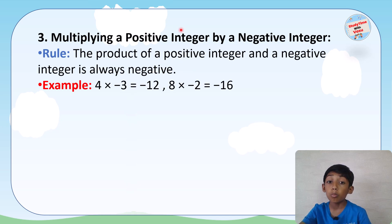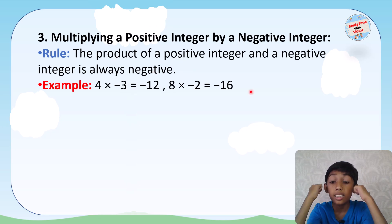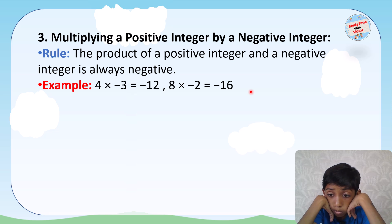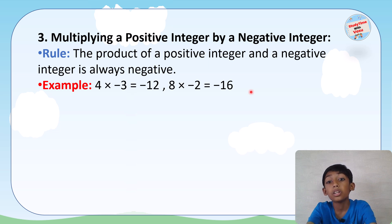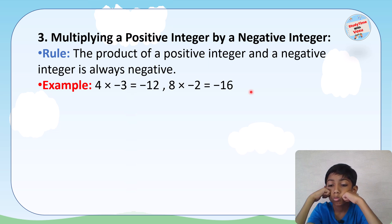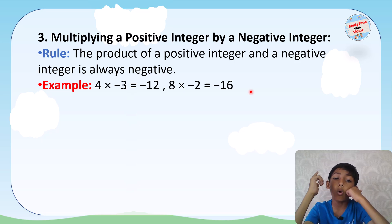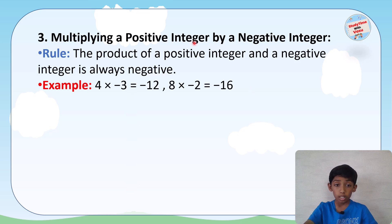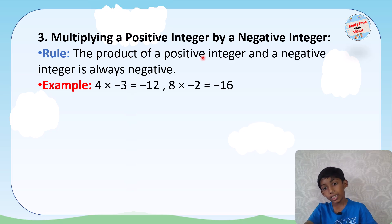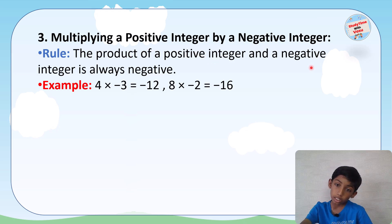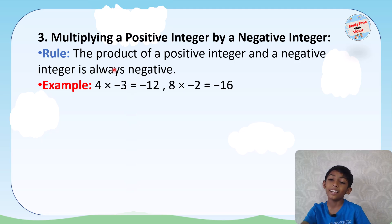Next, how to multiply a positive integer by a negative integer — that is a big question. The rule is: the product of a positive integer and a negative integer is always negative.